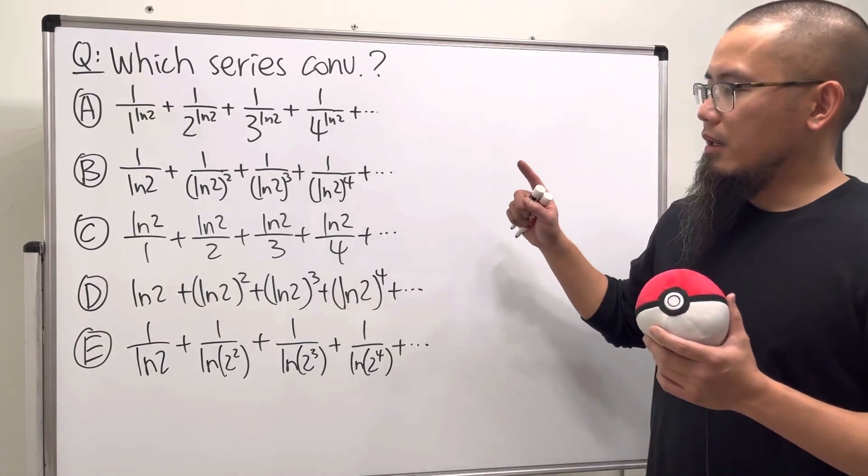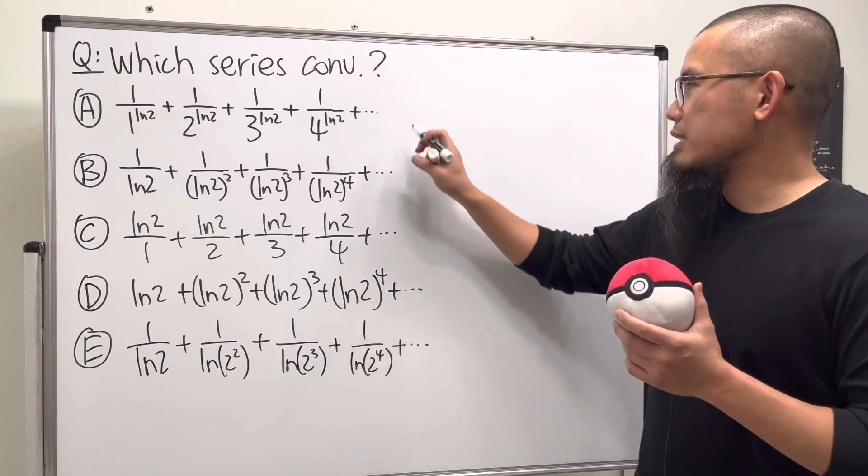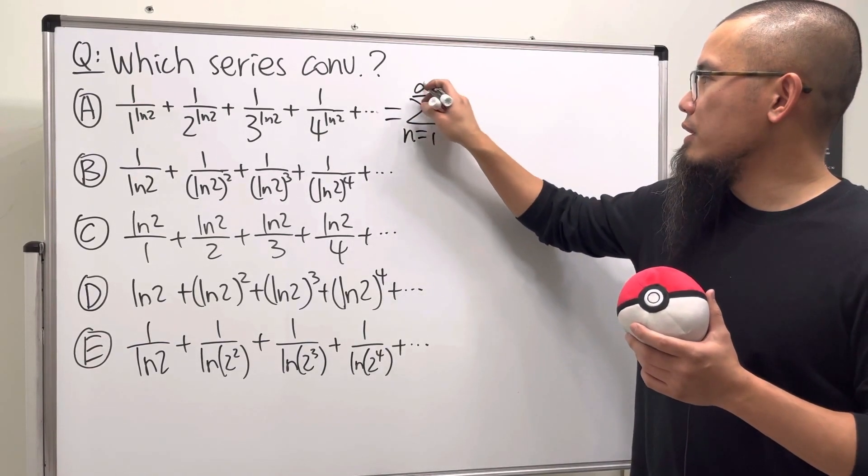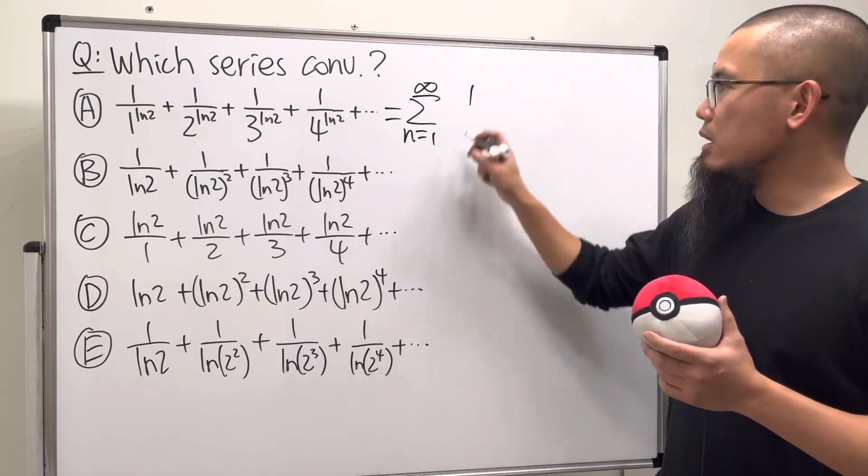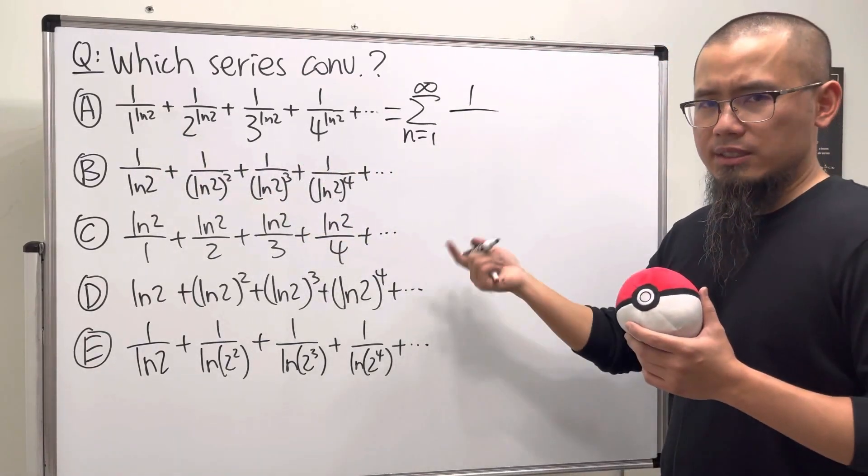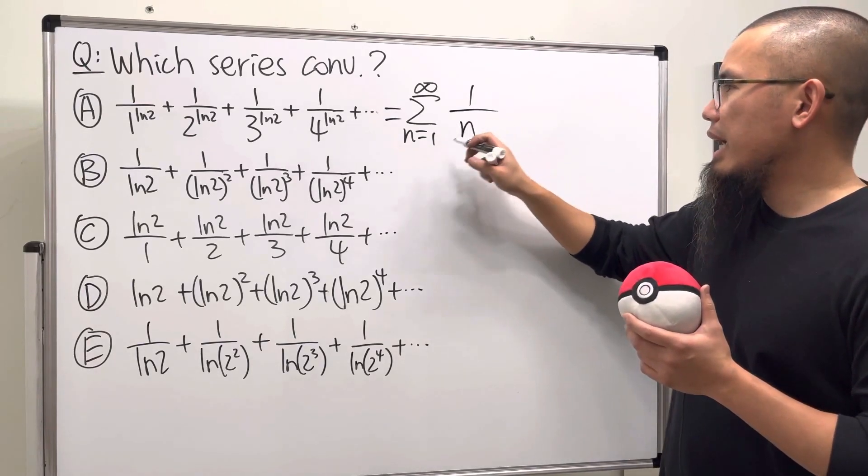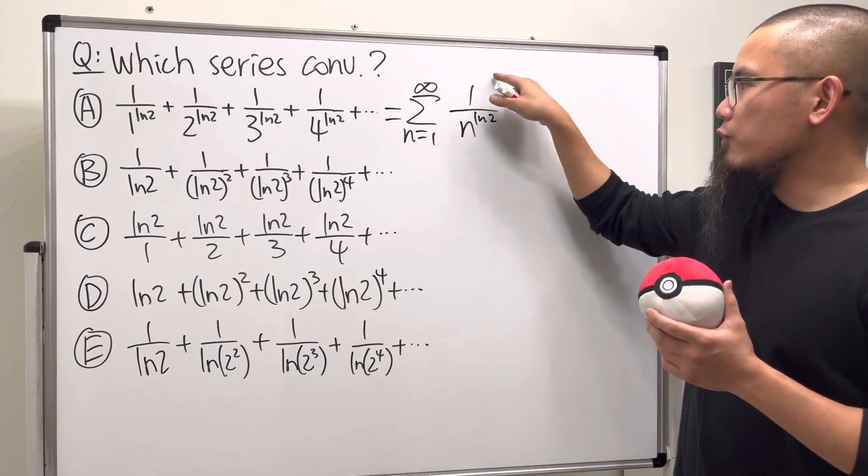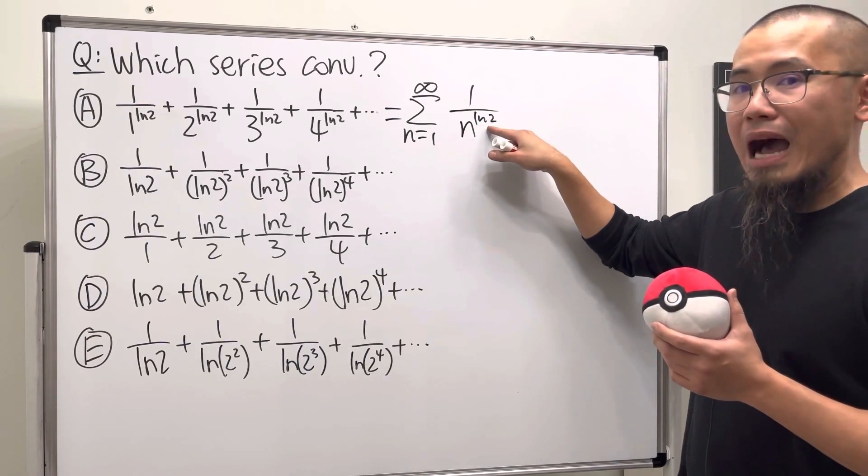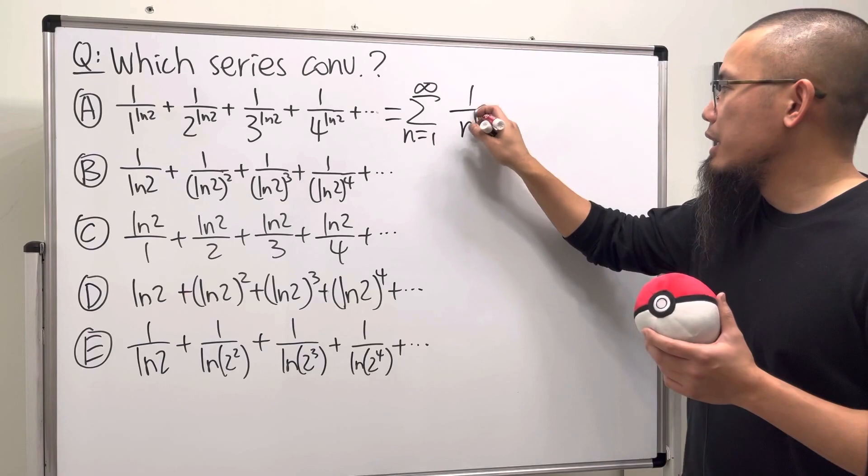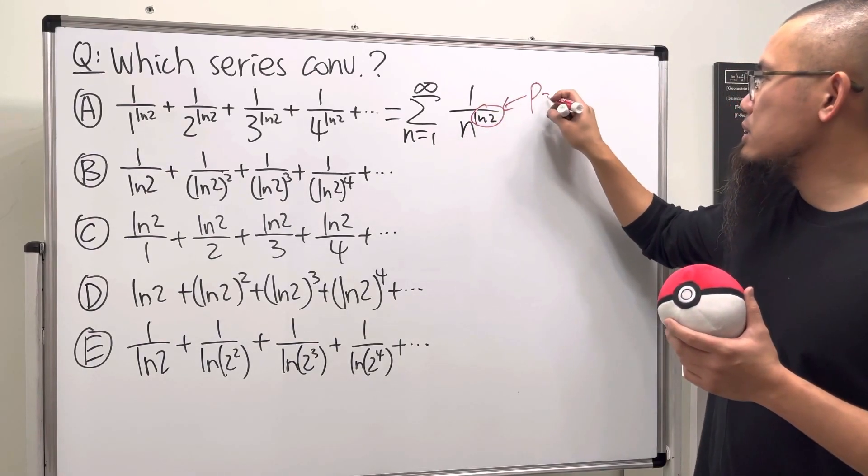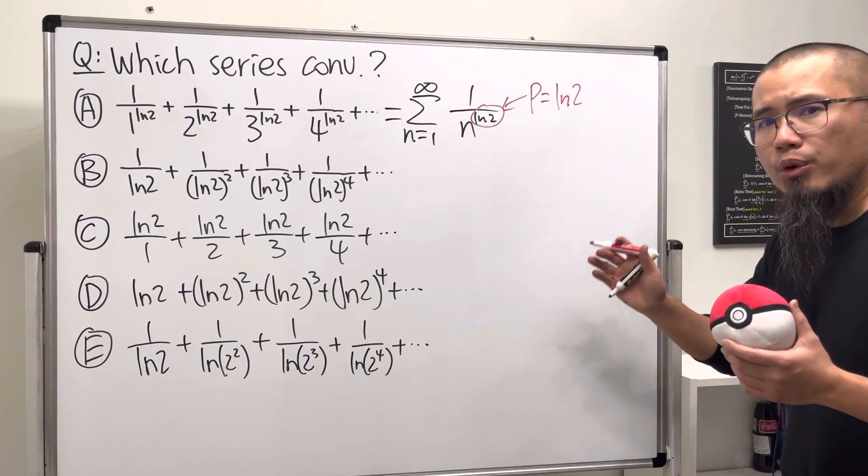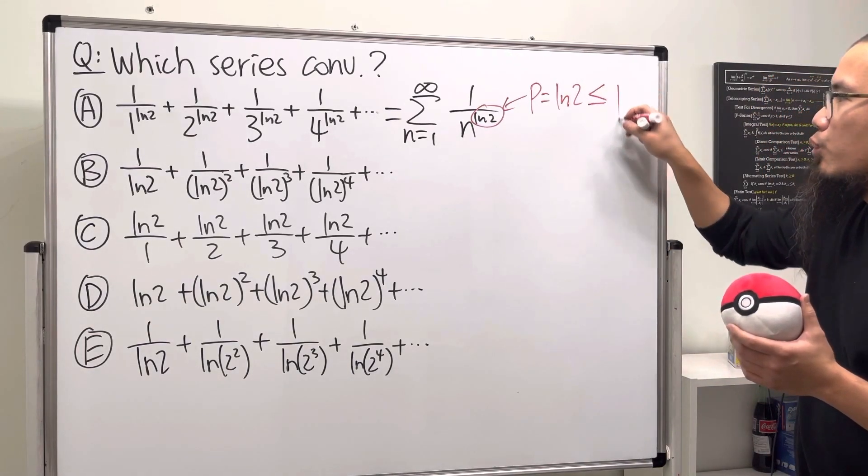Cool, let's go over them one by one. Take a look at the first one. Let's put this into summation form: n goes from one to infinity, everything on top is just one, and we have 1, 2, 3, 4—so that's changing, that's the n—and the power is just ln2. So we have the series of 1 over n to some power, so this is actually a p-series. Here is the p, which is ln2, and ln2 is approximately 0.693, and that's less than one. Therefore, this is actually a divergent p-series, so that's not the answer.